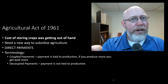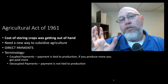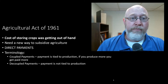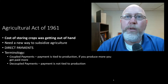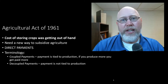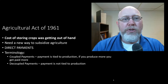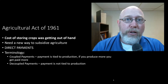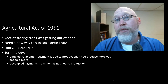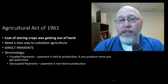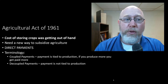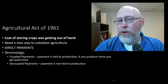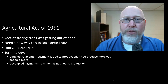Moving all that grain around started costing the federal government a lot of money. As we roll into the 1960s, we begin to understand that if we're going to continue subsidizing agriculture, we're going to have to do it differently because of the costs associated with doing so.